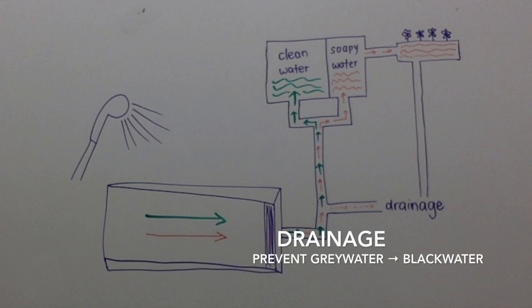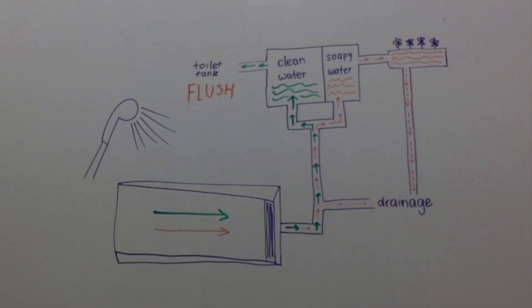After some time, water will be drained from the entire system to prevent the conversion of grey water to black water. The relatively clear water will be used to flush toilets.